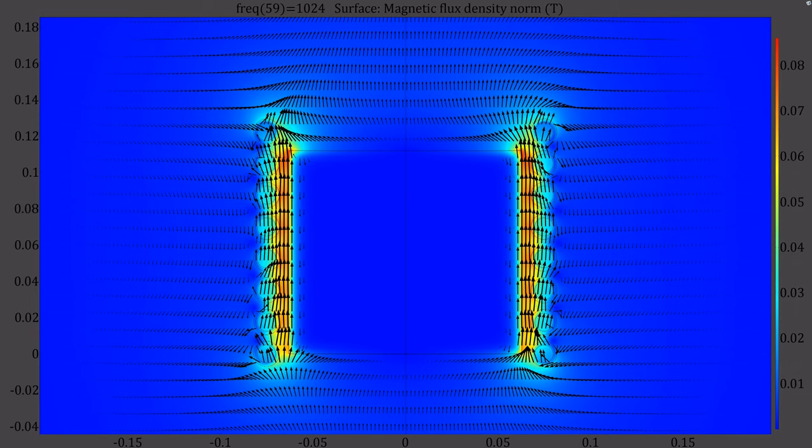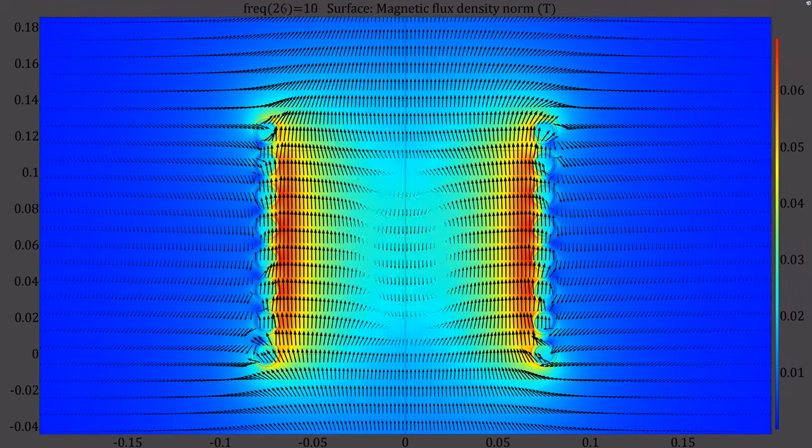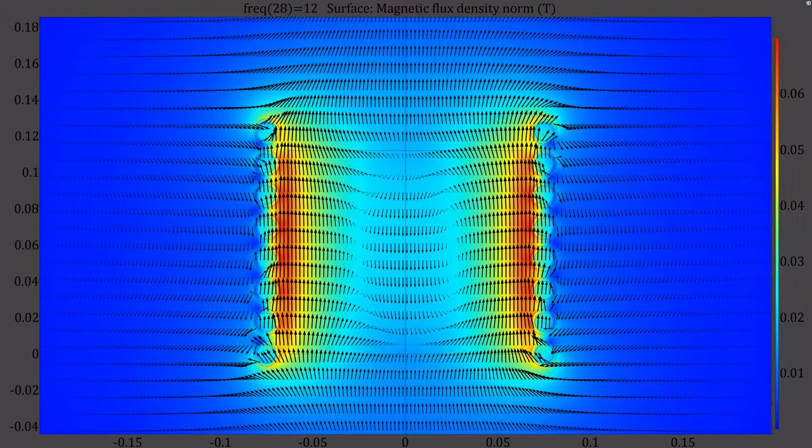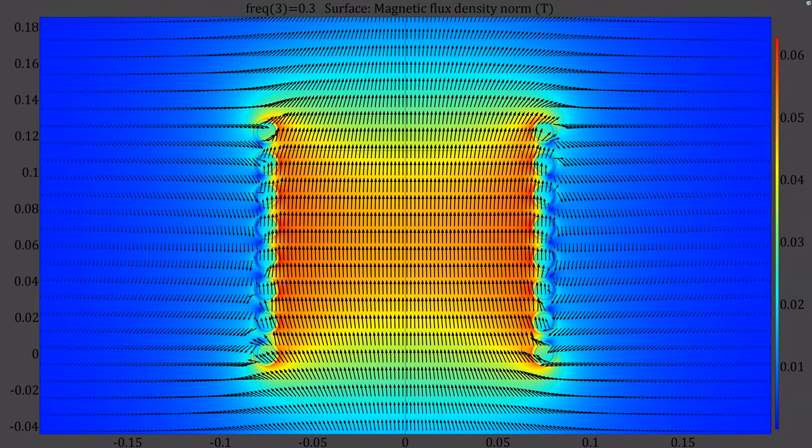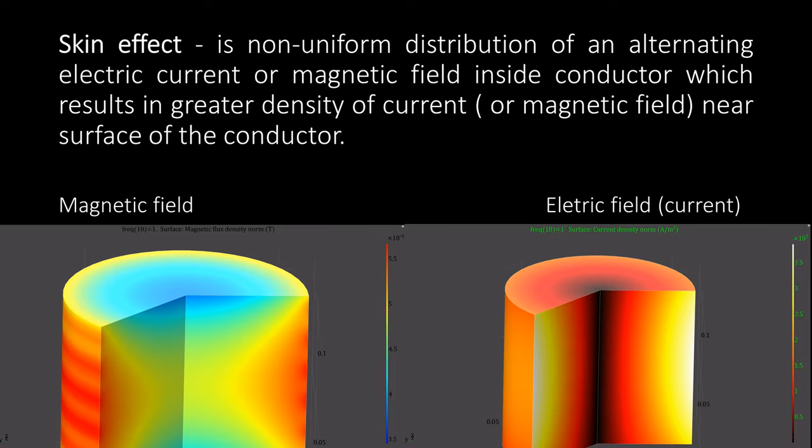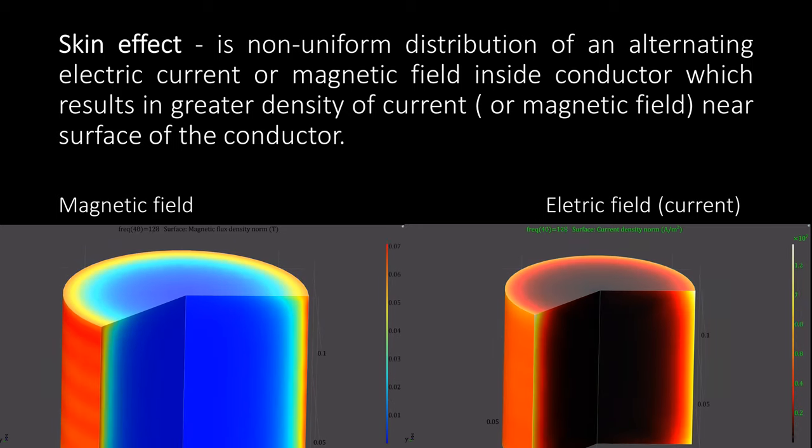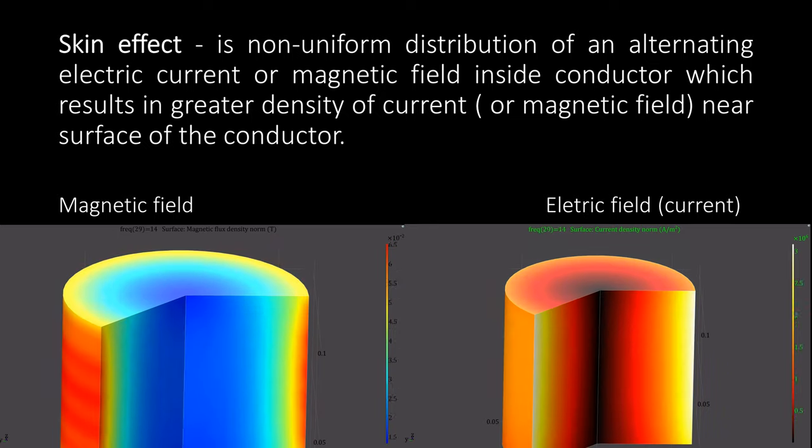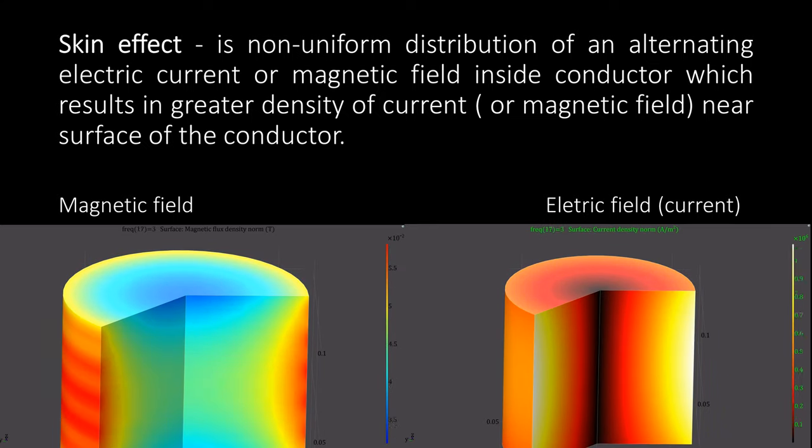To understand the process better let's look at the animation of this process when frequency is changed. We can see that increasing frequency creates an effect where majority of magnetic flux is concentrated near surface of conductor. This effect is called skin effect, which describes how alternating electric or magnetic field intensity distribution is changed in conducting medium like metals.